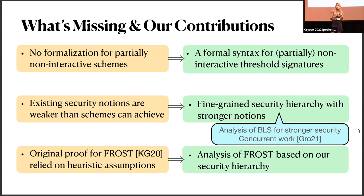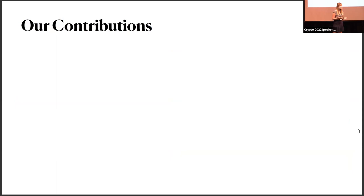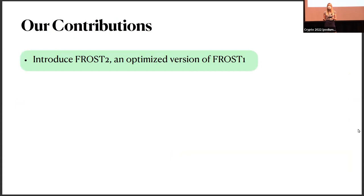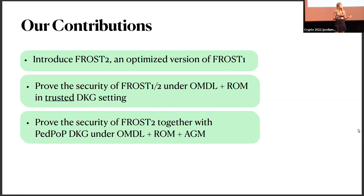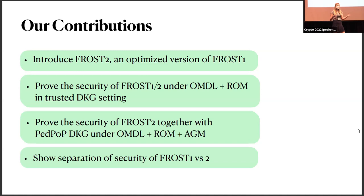In this talk I'll focus on the FROST threshold scheme. Our concrete contributions are: we present FROST2, an optimized version of the original FROST scheme (FROST1), which reduces the number of exponentiations required for signing from t to 1. We prove the security of both FROST1 and FROST2 under the one-more discrete logarithm assumption in the random oracle model, assuming a trusted DKG. We also prove the security of FROST2 together with the distributed key generation protocol from the original FROST paper, allowing any number of preprocessing signers, including a dishonest majority.